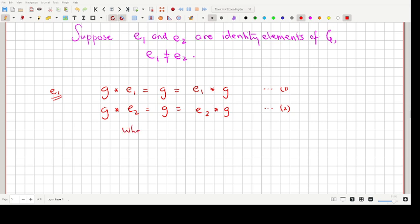The condition here is that G belongs to capital G and it is an arbitrary element, so it is true for all the elements of our group G. Fantastic. Now what we'll do is we will substitute